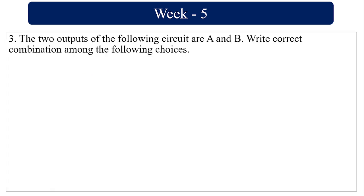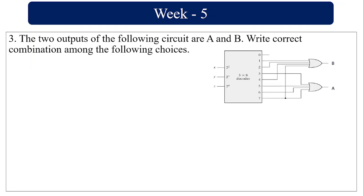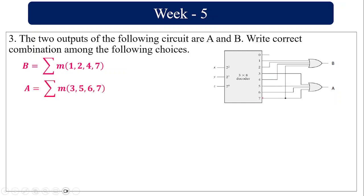The two outputs of the following circuit are A and B — write the correct combination among the following choices. So this is the 3-to-8 decoder and here they have used OR gate inputs B and A. So B can be written as summation m of 1, 2, 4, 7 and A has minterms 3, 5, 6, 7. So now we can use a K-map to get the equations.